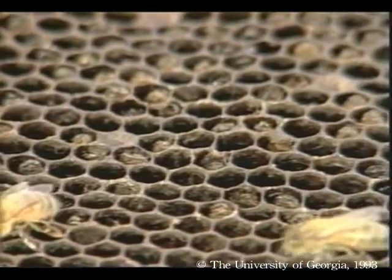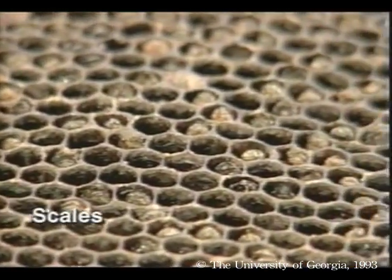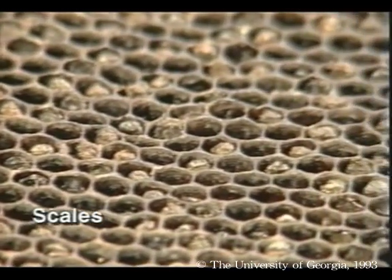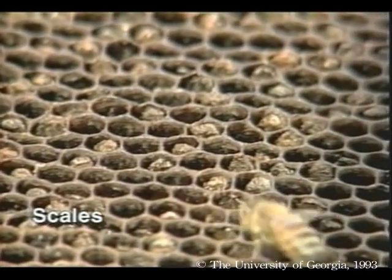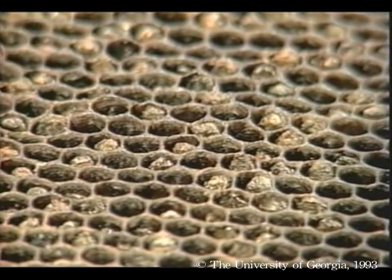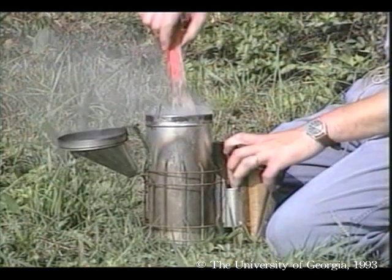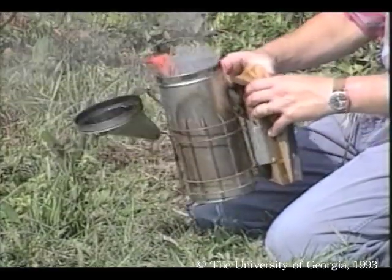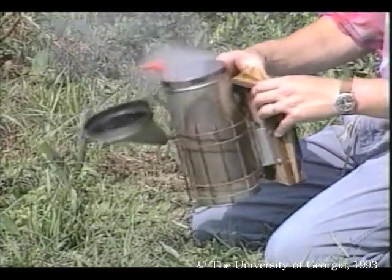In later stages, dead brood dry down to individual scales, each containing billions of spores. Check for scales by holding the comb so that sunlight reaches into cells. Anytime you handle an AFB colony, clean up carefully to prevent contaminating other colonies with spores.